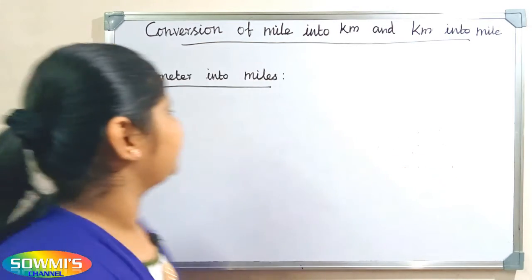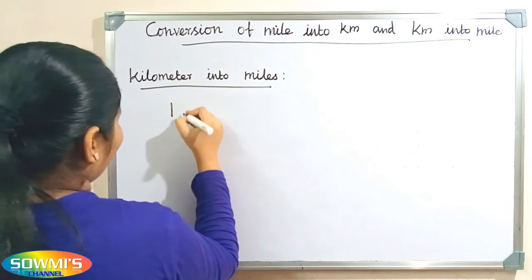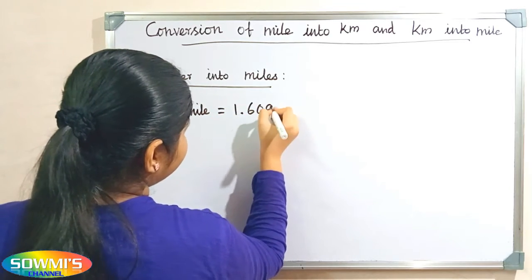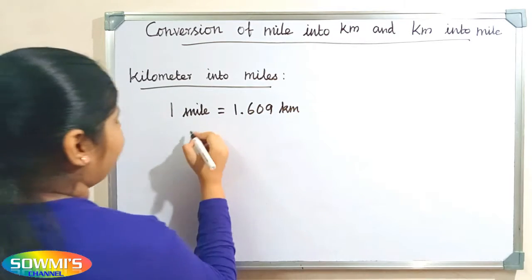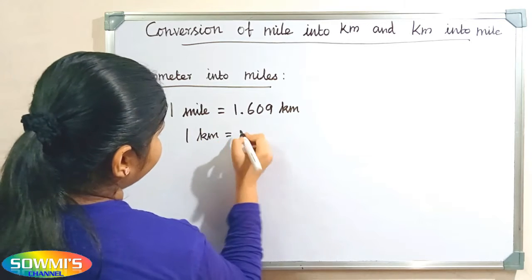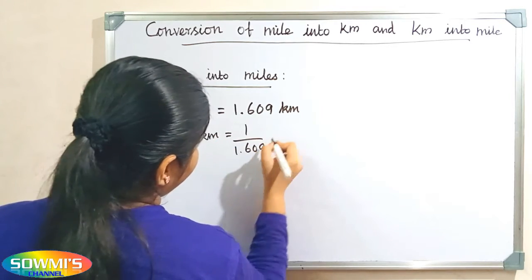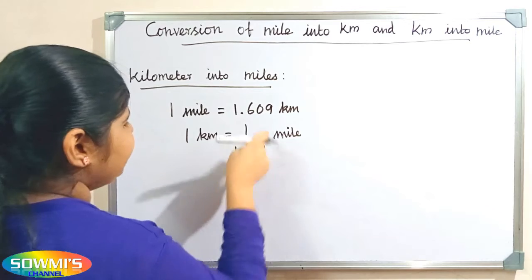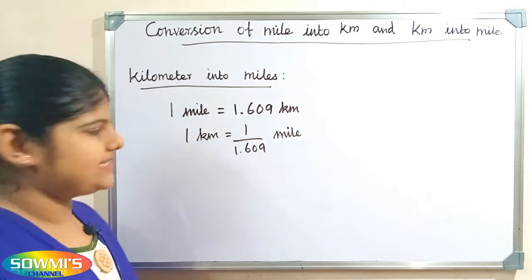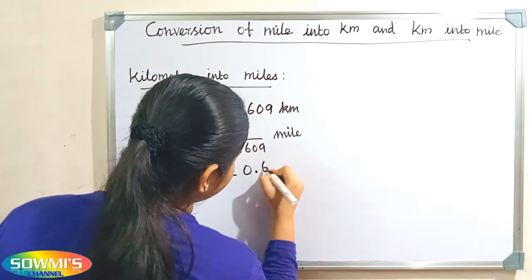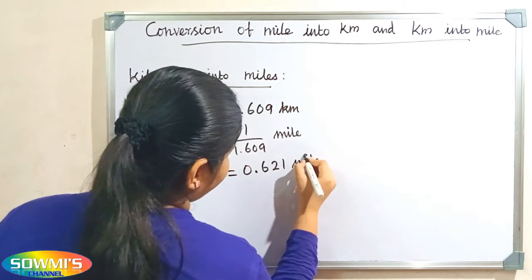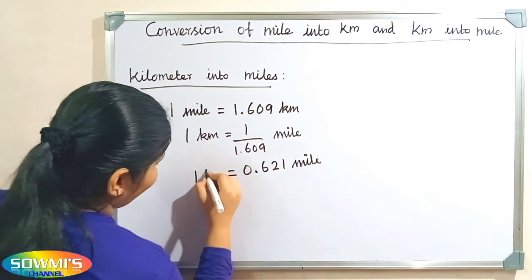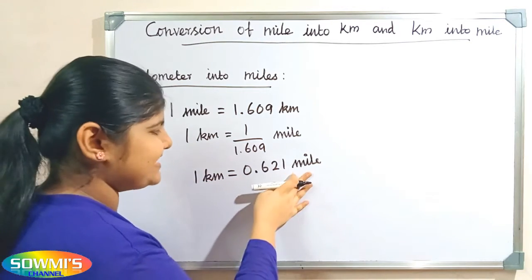Now we will see how to convert kilometers into miles. We already know that 1 mile is equal to 1.609 kilometers, so 1 kilometer is equal to 1 divided by 1.609 miles. When we divide 1 by 1.609, our answer will be 0.621. So the formula for converting kilometers into miles is: 1 kilometer is equal to 0.621 miles.